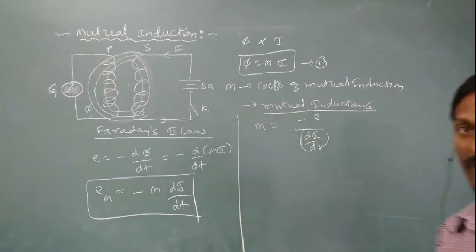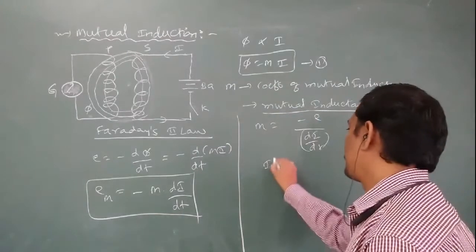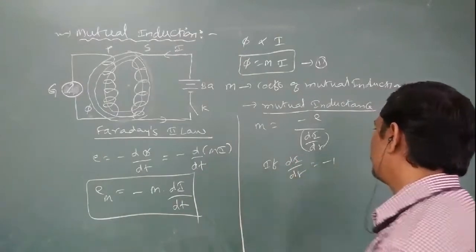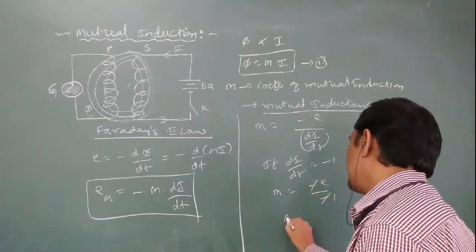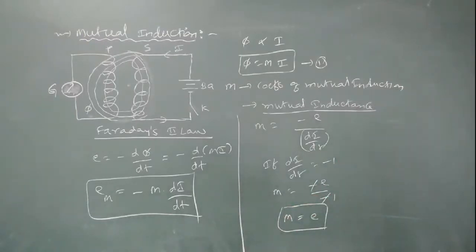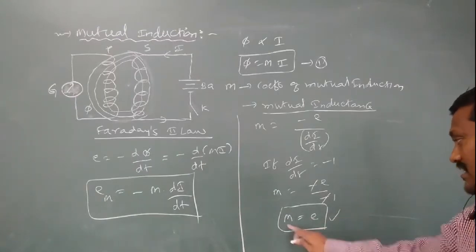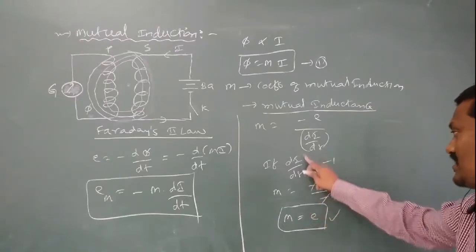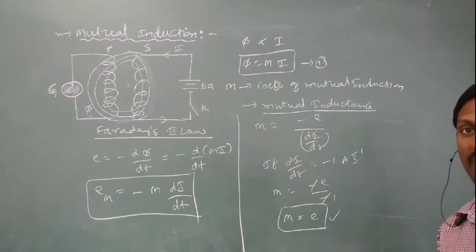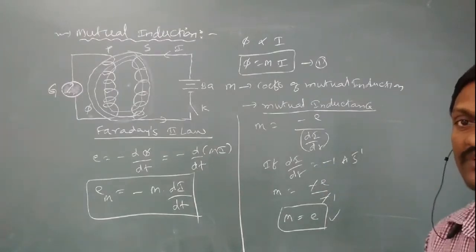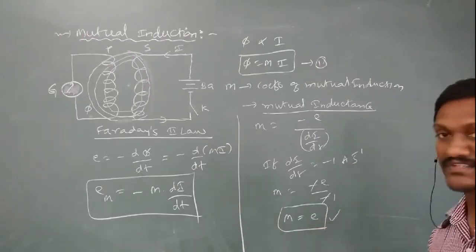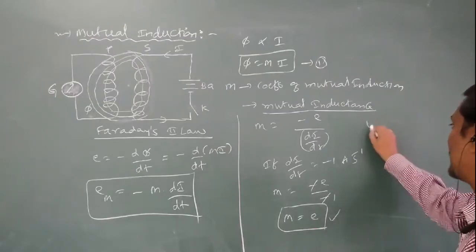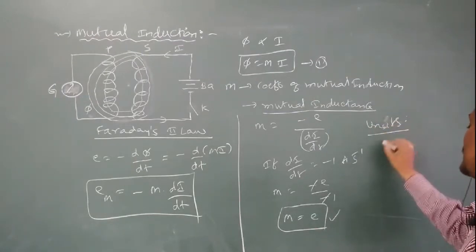The negative sign indicates that the direction of induced EMF is always opposite to the rate of change of current, or always opposite to the rate of change of flux. From this expression, M equals E divided by (dI/dt). If dI/dt equals minus 1 ampere per second, then M equals E. So mutual inductance is defined as the induced EMF when the rate of change of current is minus 1 ampere per second — that is, when the rate of decrease of current is 1 ampere per second. The units of mutual inductance are Henry (H).